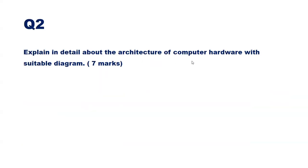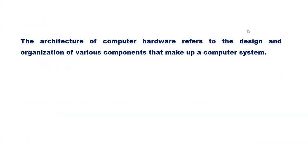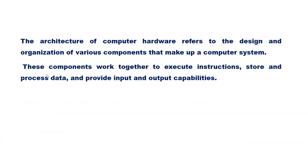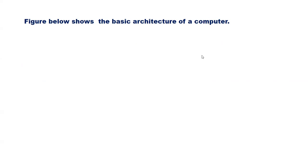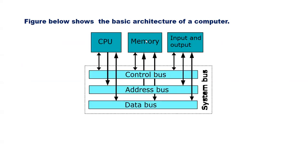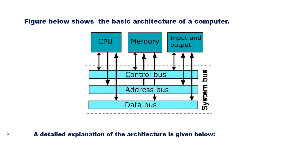Question 2: Explain in detail about the architecture of computer hardware with a suitable diagram. The architecture of computer hardware refers to the design and organization of various components that make up a computer system. These components work together to execute instructions, store and process data, and provide input and output capabilities. The basic architecture includes a CPU, memory, and input-output unit, all connected through a control bus, address bus, and data bus.